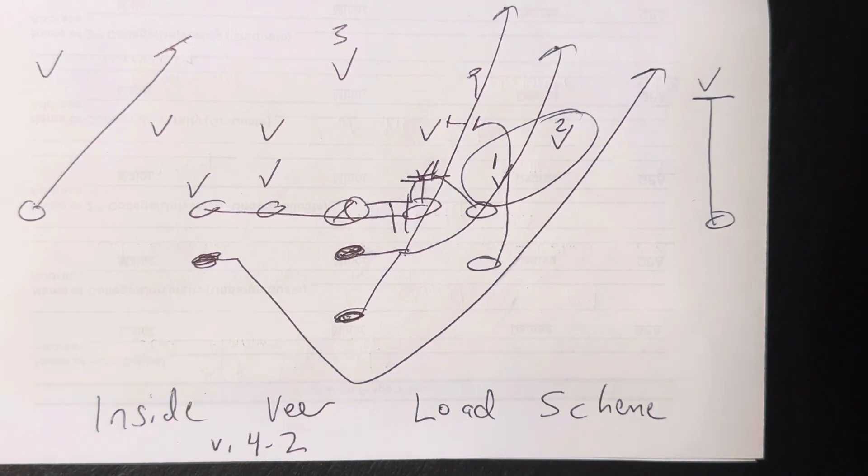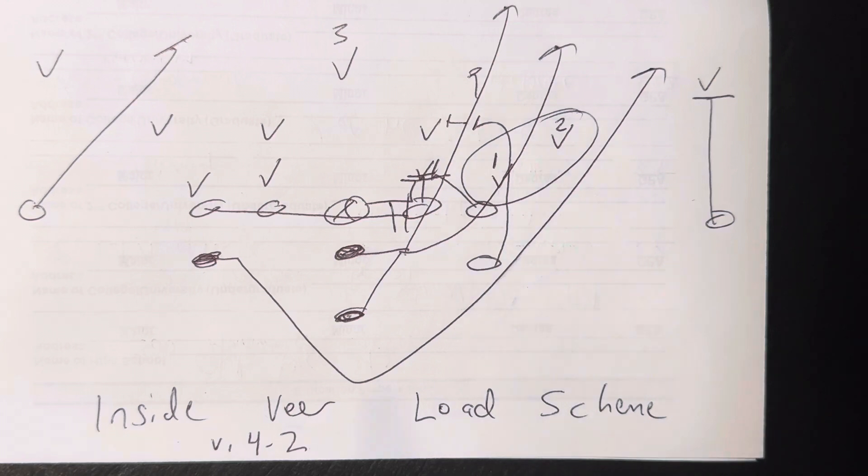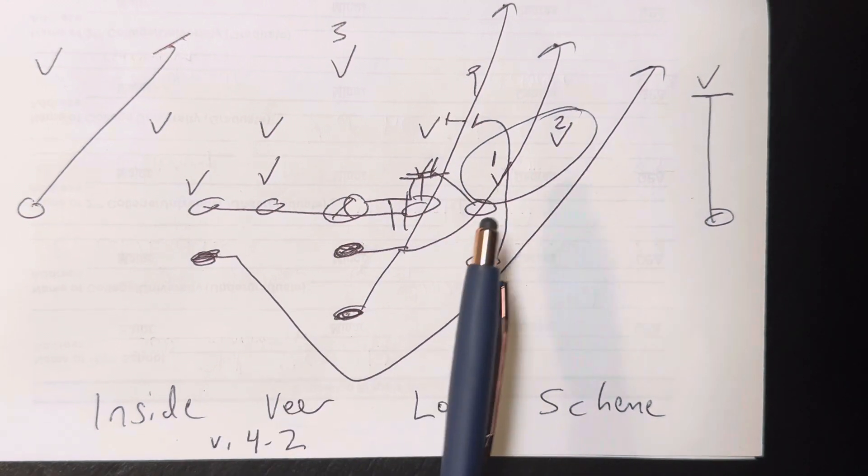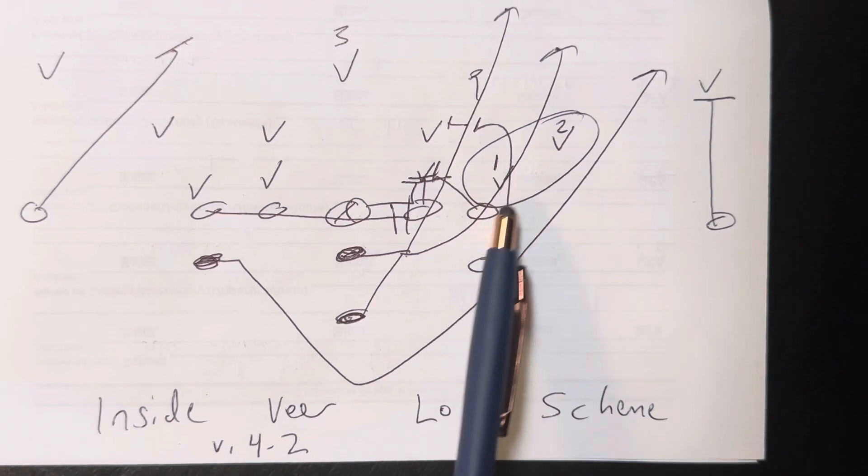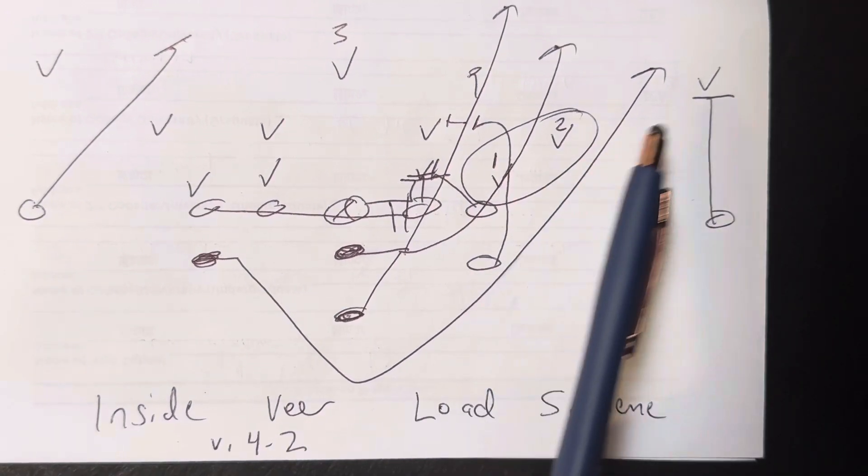If you're running inside veer, you can triple team the defensive tackle if it's a load scheme, which means basically if it's like a 4-2 defense, where you've got number one here touching the tackle, number two next to him, and then there's nobody else.